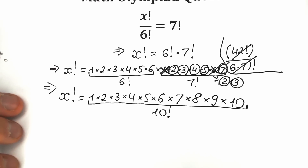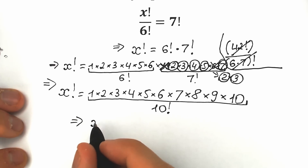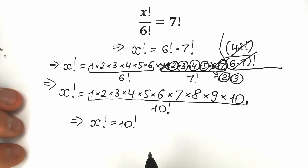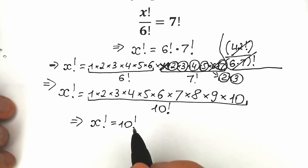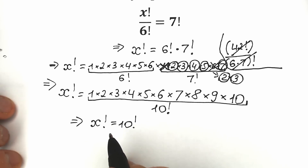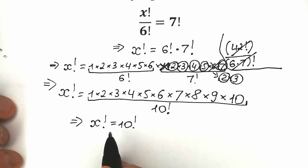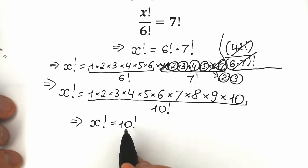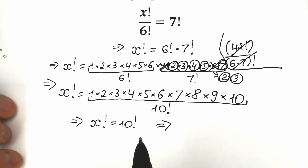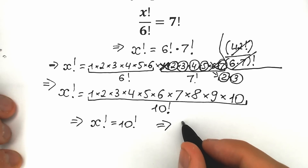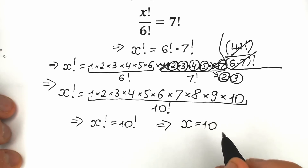Now, the second most common mistake: many students find 10 factorial and compute its exact numerical value, then write a huge number for x. But if you look closely, x factorial equals 10 factorial — just cancel the factorial on both sides, and x equals 10. We don't need to compute the exact value of 10 factorial. x is simply equal to 10.